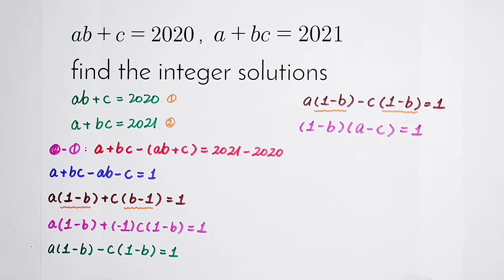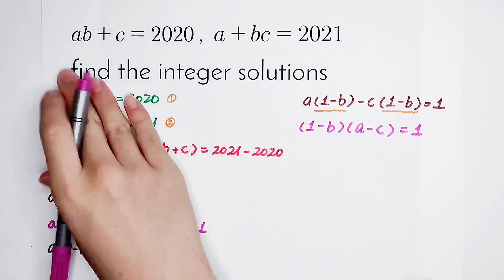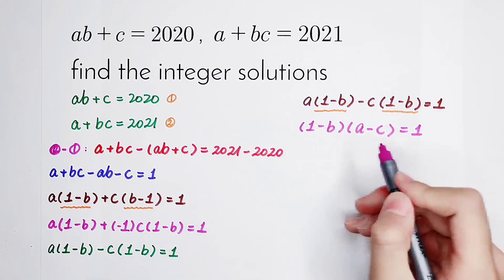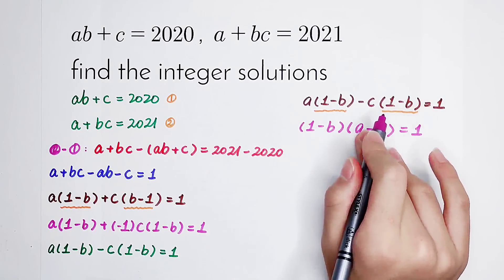It is equal to 1. Because we have to find the integer solutions of this question, A, B, and C are all integers. Because A, B, and C, they are all integers. So 1 minus B and A minus C, they are both integers.